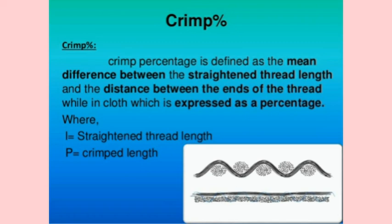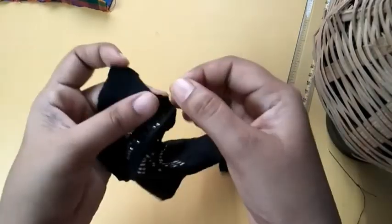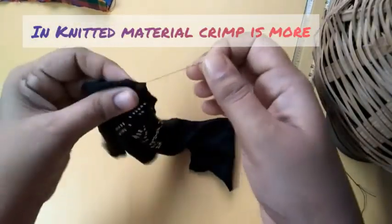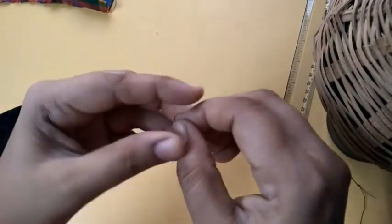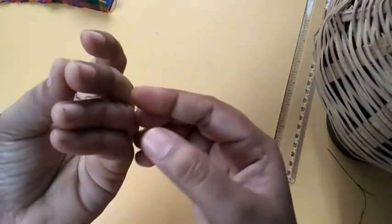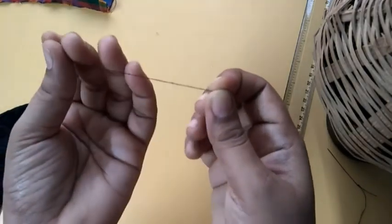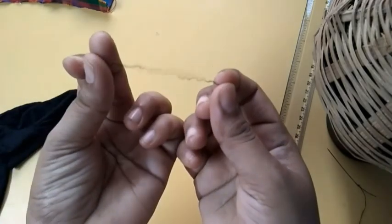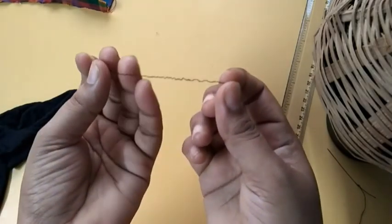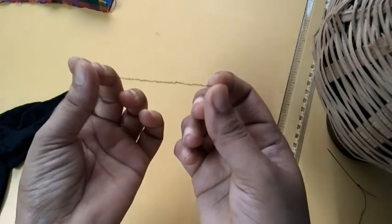For example, this is a knitted sample. As you can see, a thread is removed from the knitted sample and you can see the waviness in knitted fabric. The waviness of yarn is more compared to woven fabric due to the movement of courses and wales.